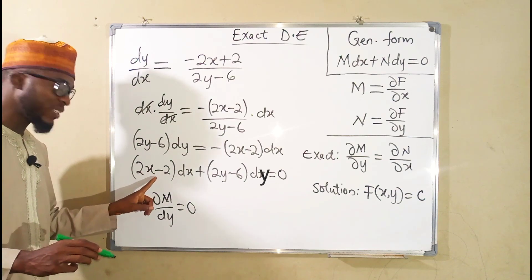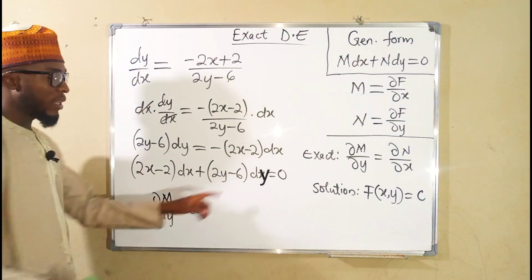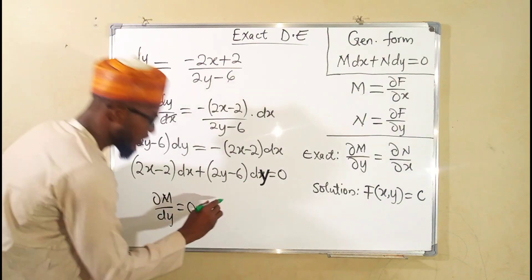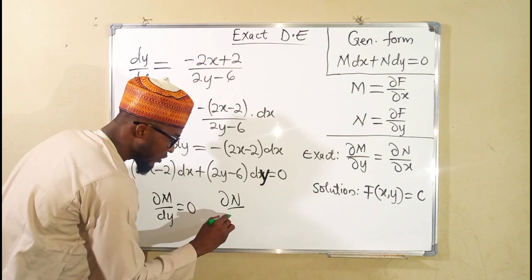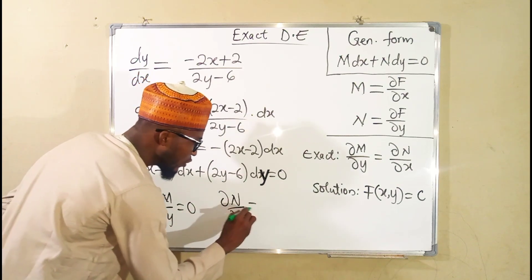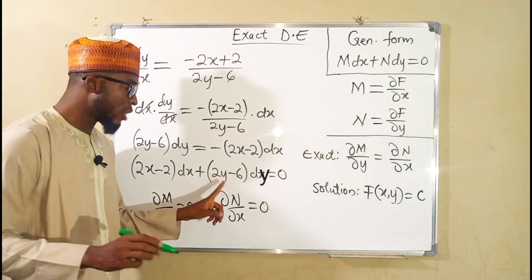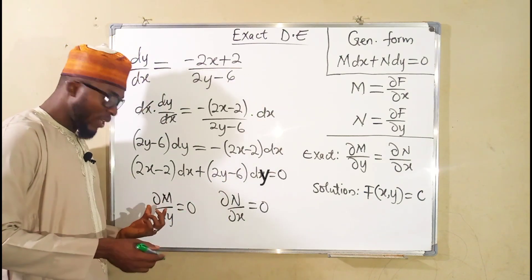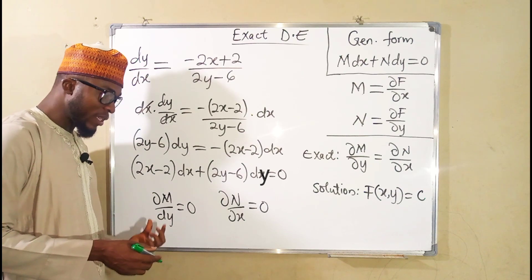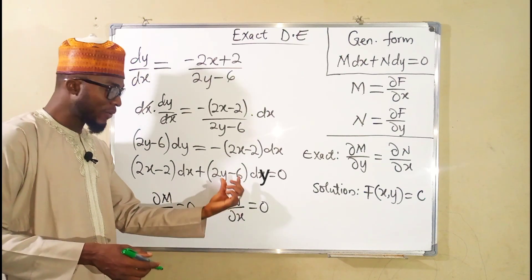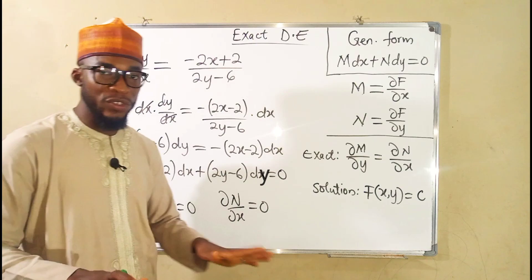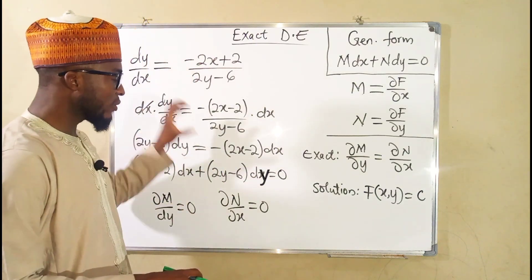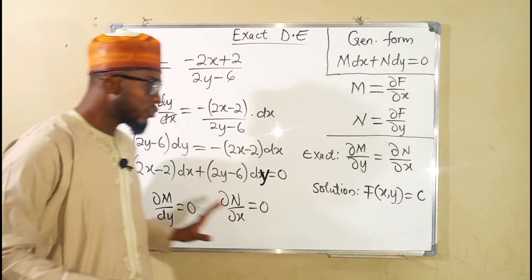N is the term connected to dy. The partial derivative of N with respect to x is also equal to zero, because there is no term written in x. Since the partial derivative of M with respect to y equals the partial derivative of N with respect to x, we confirm the equation is exact.